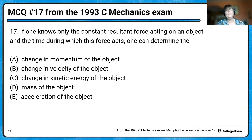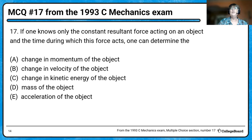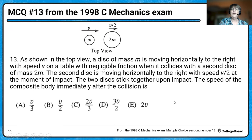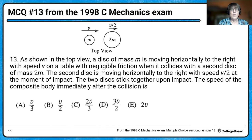Here's an example from a 1993 multiple choice question: 'If one knows only the constant resultant force acting on an object and the time during which this force acts, one can determine the...' We can determine the change in momentum. Don't forget — you have 45 minutes for 35 questions. Some will be quick, others require more thought. If you start doing lots of calculations, you're probably doing it the hard way. Skip and go back, but pick something — no penalty for guessing. Eliminate obvious wrong answers.